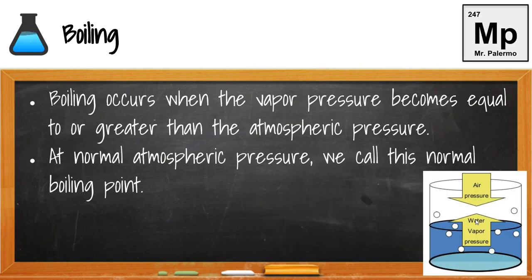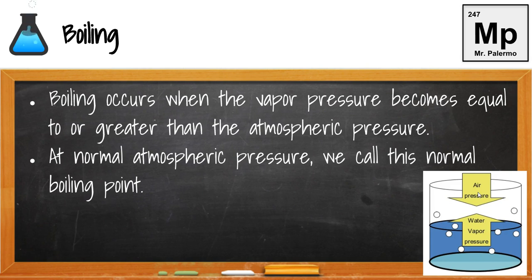So that was evaporation. What is boiling? Boiling occurs when the vapor pressure — the pressure of the gas above the liquid — becomes equal to or greater than the atmospheric pressure, the air pressure pushing down from above. At normal atmospheric pressure, we call this the normal boiling point.